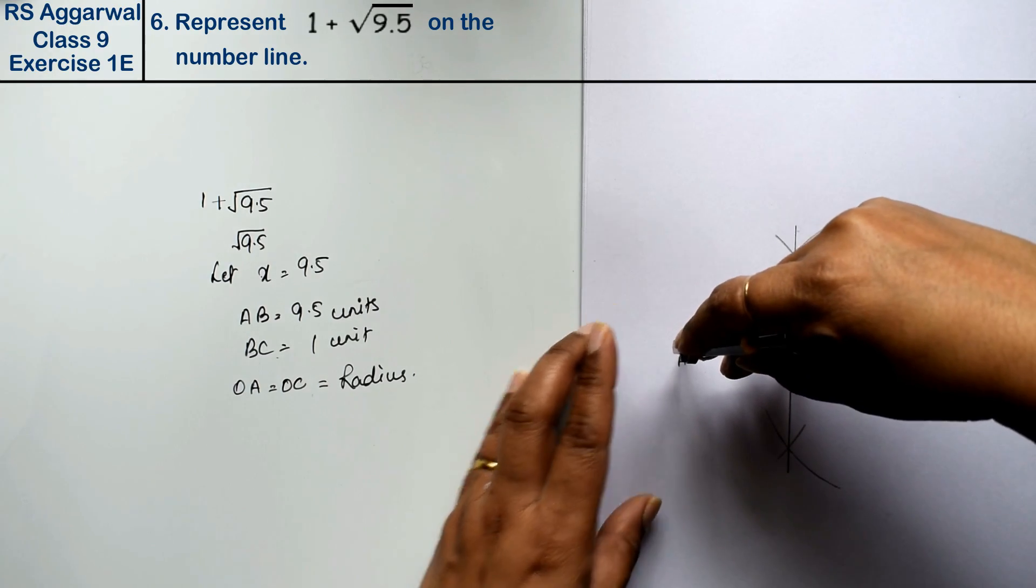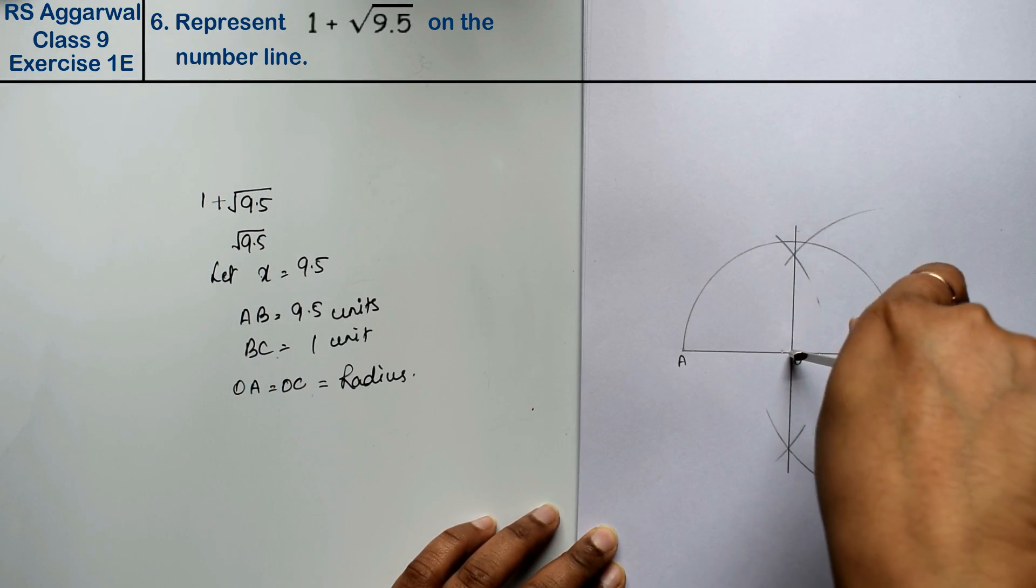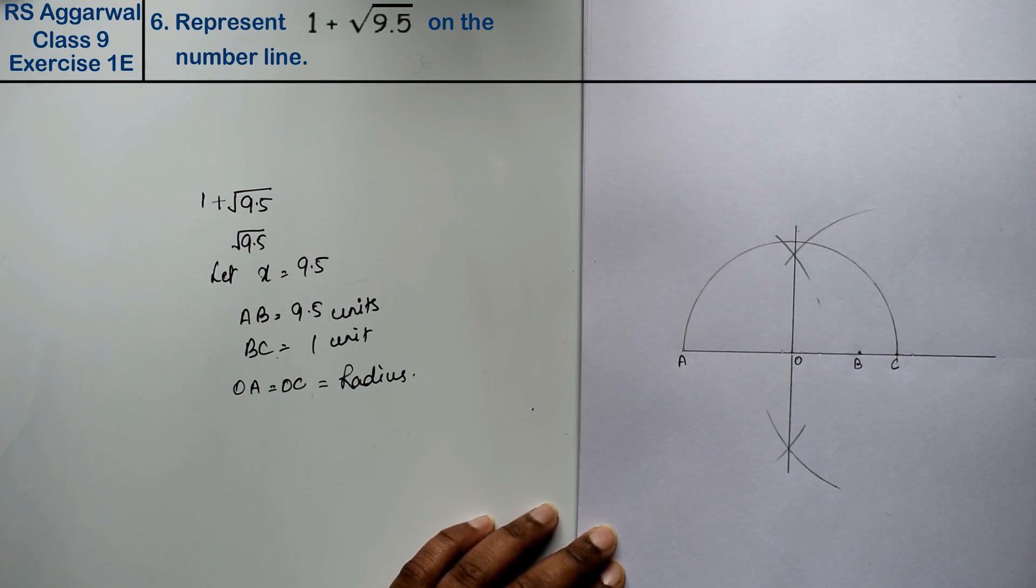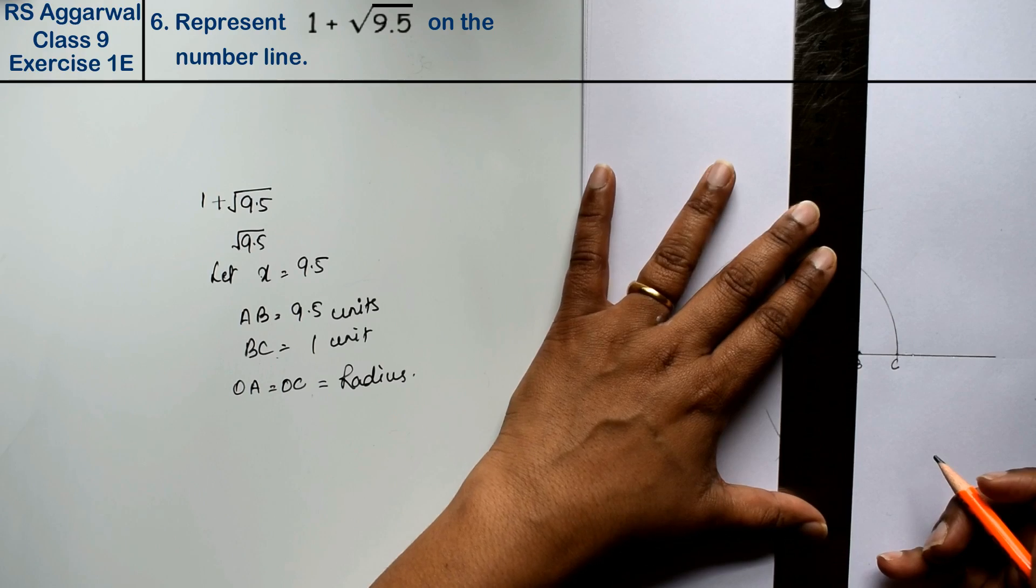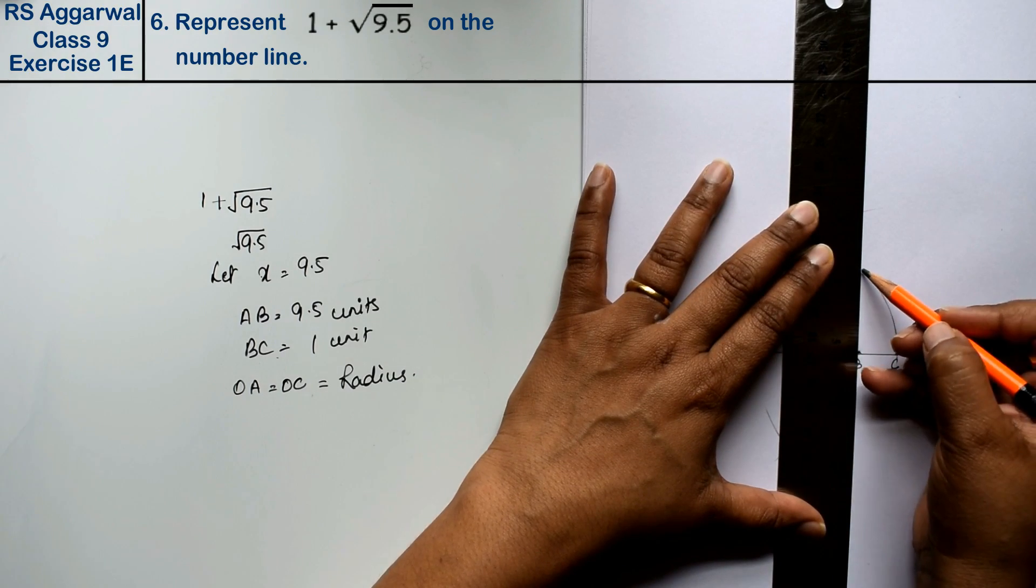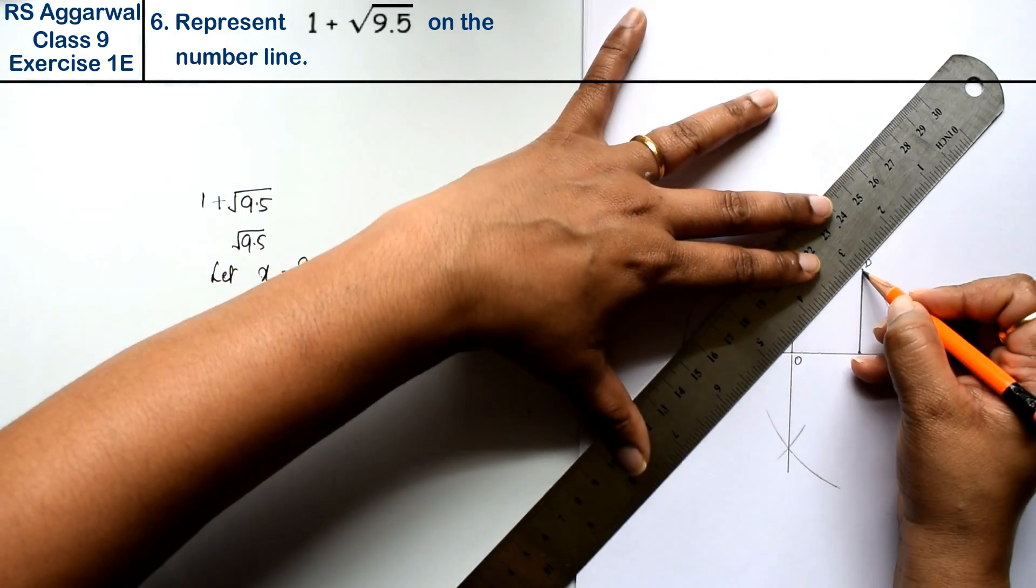Now we will draw a semicircle. Now we will join BD perpendicular to the semicircle. So this will be our D point and this will be O.